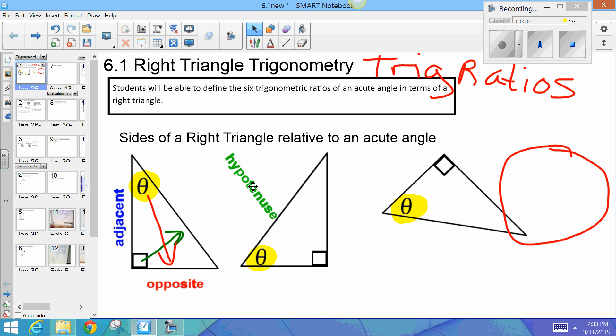Alright, for the second triangle, hypotenuse is the one across from the right angle. Opposite does not touch angle theta. It's across from angle theta. And adjacent is next to angle theta.